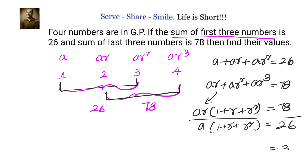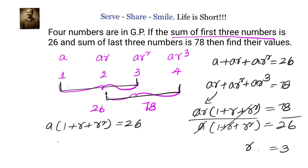Dividing the second equation by the first, we get r = 3. Now substituting r = 3 back into the first equation: a(1 + 3 + 9) = 26. Since 1 + 3 + 9 = 13, we get 13a = 26, so a = 2.